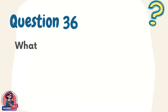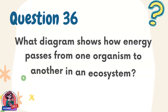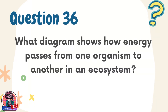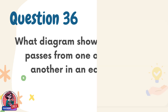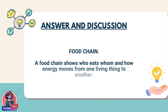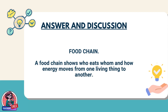Question 36. What diagram shows how energy passes from one organism to another in an ecosystem? Answer: Food chain. A food chain shows who eats whom and how energy moves from one living thing to another.